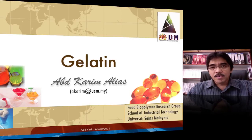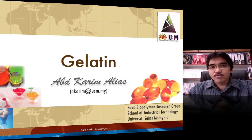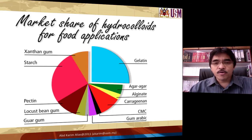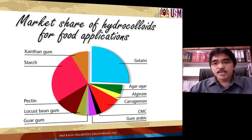I'm sure you have heard or read about it, and in fact maybe you have eaten it in your food. This special hydrocolloid that we are going to learn in this lesson is called gelatin. Looking at the market share of hydrocolloids for food application, among the plant hydrocolloids, starch, pectin, and carrageenan appear to dominate. But notice that gelatin has the biggest market share among all the hydrocolloids. Can you figure out why gelatin is such an important hydrocolloid?